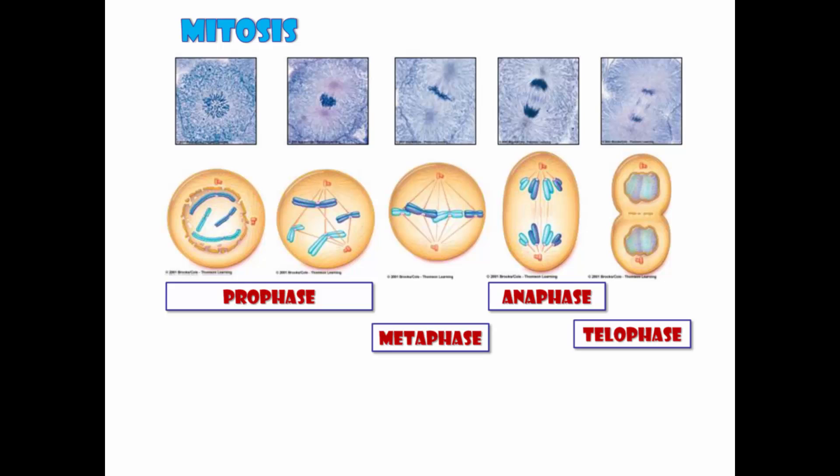To help remember the phases, here's a mnemonic using the first letter of each phase. Interphase — the in-between phase when the cell is not dividing. Prophase — the cells are preparing to divide. Metaphase — middle, chromosomes line up in the middle. Anaphase — they split apart from each other. Telophase — two, we have two cells. So: Prepare, Middle, Apart, Two.